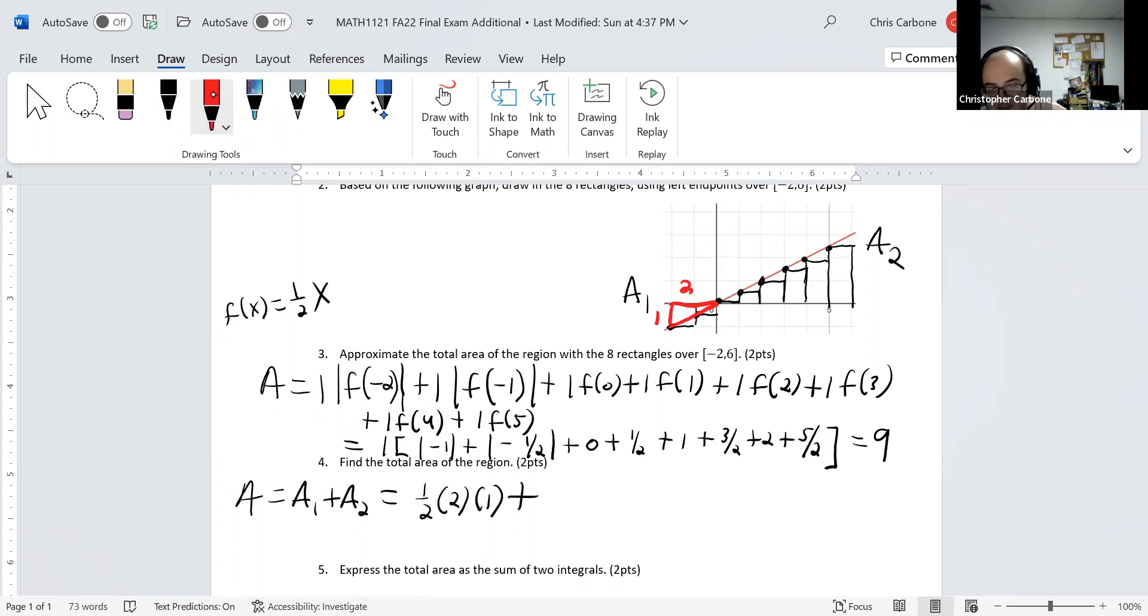And we're going to add to that this second triangle. Again, let me just highlight it here for our sake. This has a base of 6 and a height of 3. So, plus one half times 6 times 3.